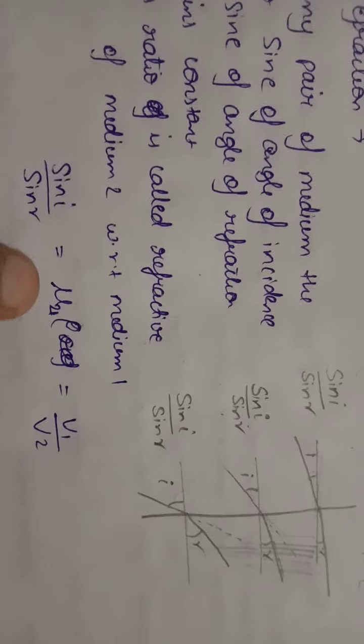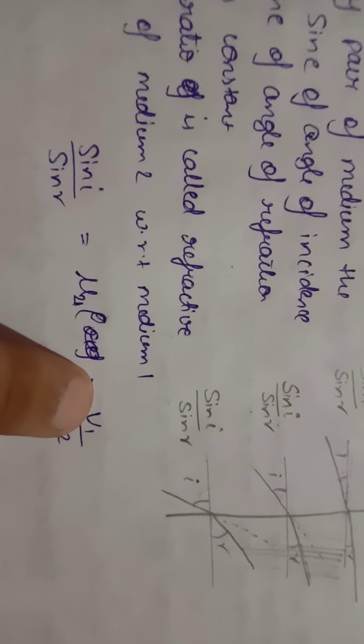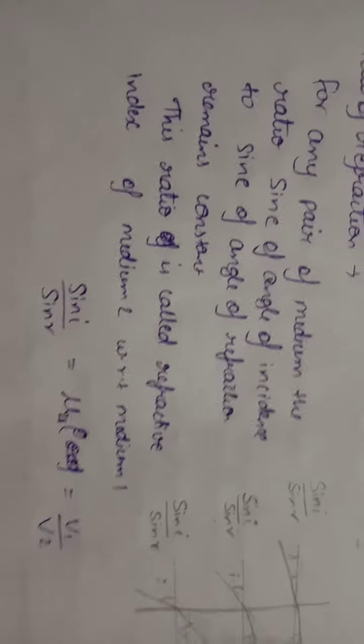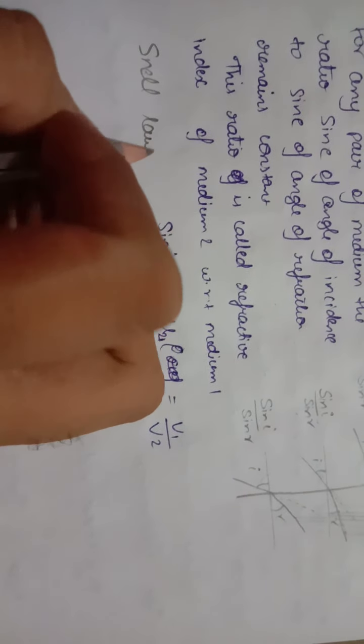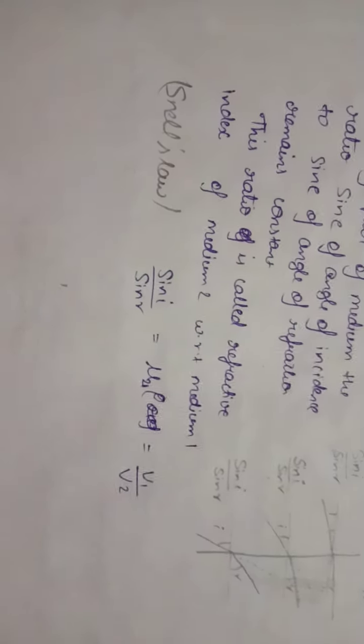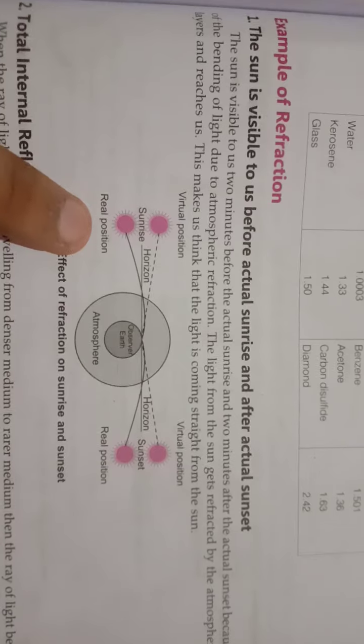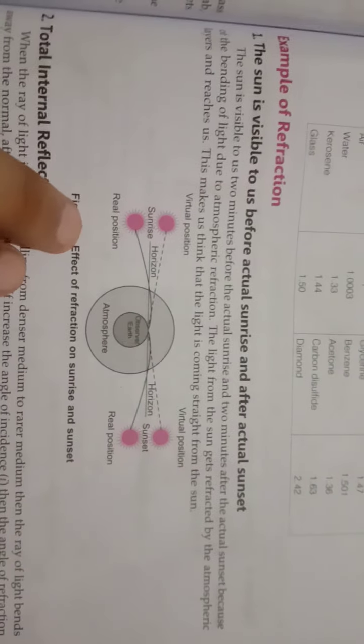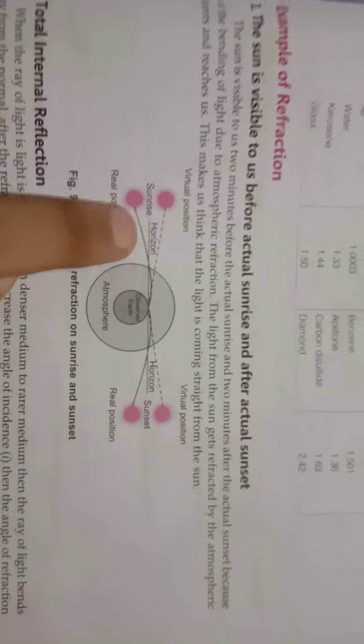And mu 2,1 is equal to V1 divided by V2, velocity of light in medium 1 and velocity of light in medium 2. This law is known as Snell's law. A few examples are sunrise and sunset appearing 2-3 minutes before due to refraction.